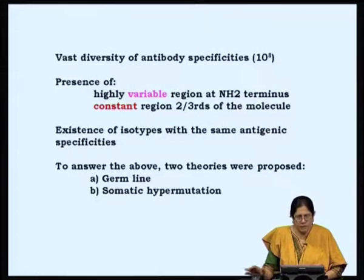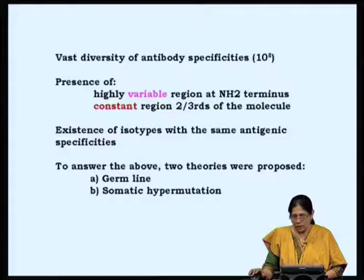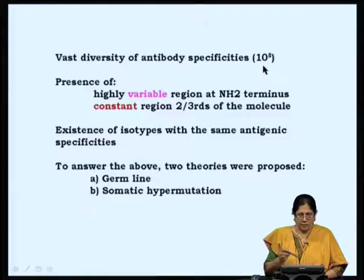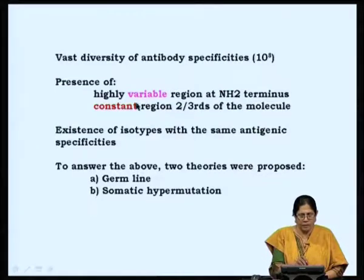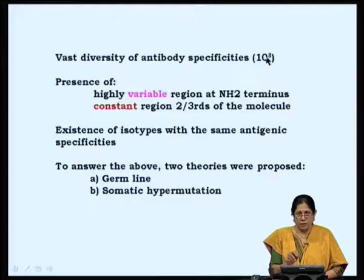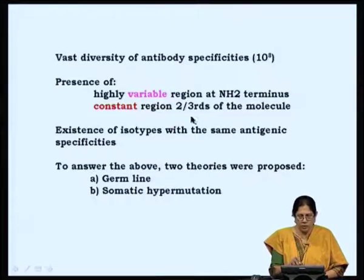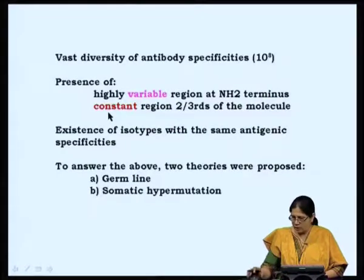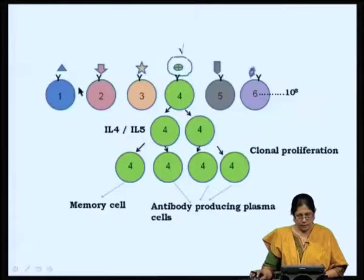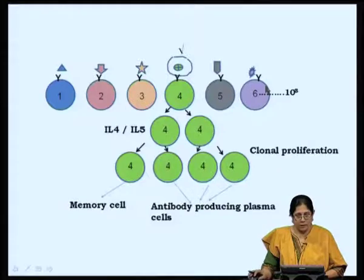We have a vast diversity of antibody specificities. We are capable of recognizing and mounting an immune response to 100 million different antigens. Intriguingly, the antigen receptor has a highly variable region at the amino terminus through which it recognizes the antigen, yet two-thirds of the same molecule is very constant. Two-thirds of the receptor present on each B cell is identical; it is only at the amino terminus — a small fragment — which is highly variable.